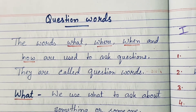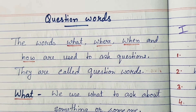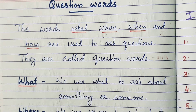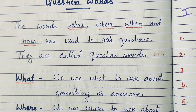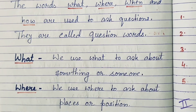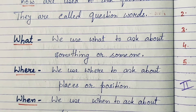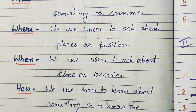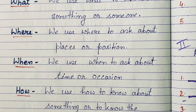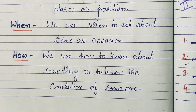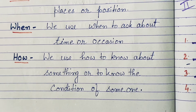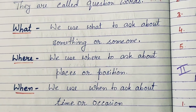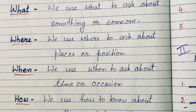Now, as I told you, it is very important to know where and how to use these question words. 'What' is used to ask about something or someone. 'Where' is used to ask about places or position. 'When' is used to ask about time or occasion. And 'how' is used to know about something or to know the condition of someone. These are the four question words.